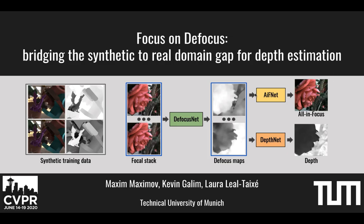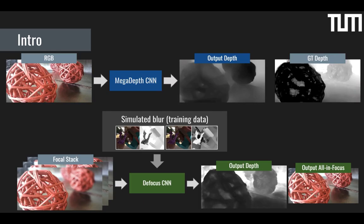Hello, we are presenting our focus and defocus paper. In this work, we focus on depth estimation from a focal stack that is trained only on synthetic data but still can generalize to real data. Depth estimation models are hard to generalize outside their training data domain. We propose to focus on domain-invariant features such as blur, which can be modeled mathematically in synthetic data. To be able to use blur, we use a focal stack as input.